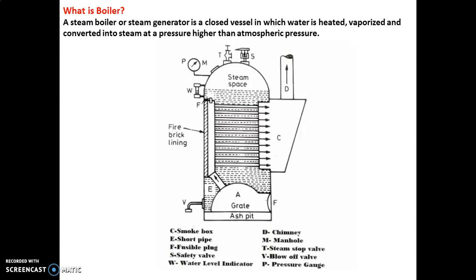Without mountings and accessories it is very difficult to run the boiler. This is one simple look or glimpse of the boiler. It consists of a number of parts like shell, grate, ash pit, smoke box, short pipe, fusible plug, safety valves, water level indicators, blow-off cock, steam stop valve, manhole, chimney, and pressure gauge. In upcoming videos we will discuss all those mountings as well as accessories.